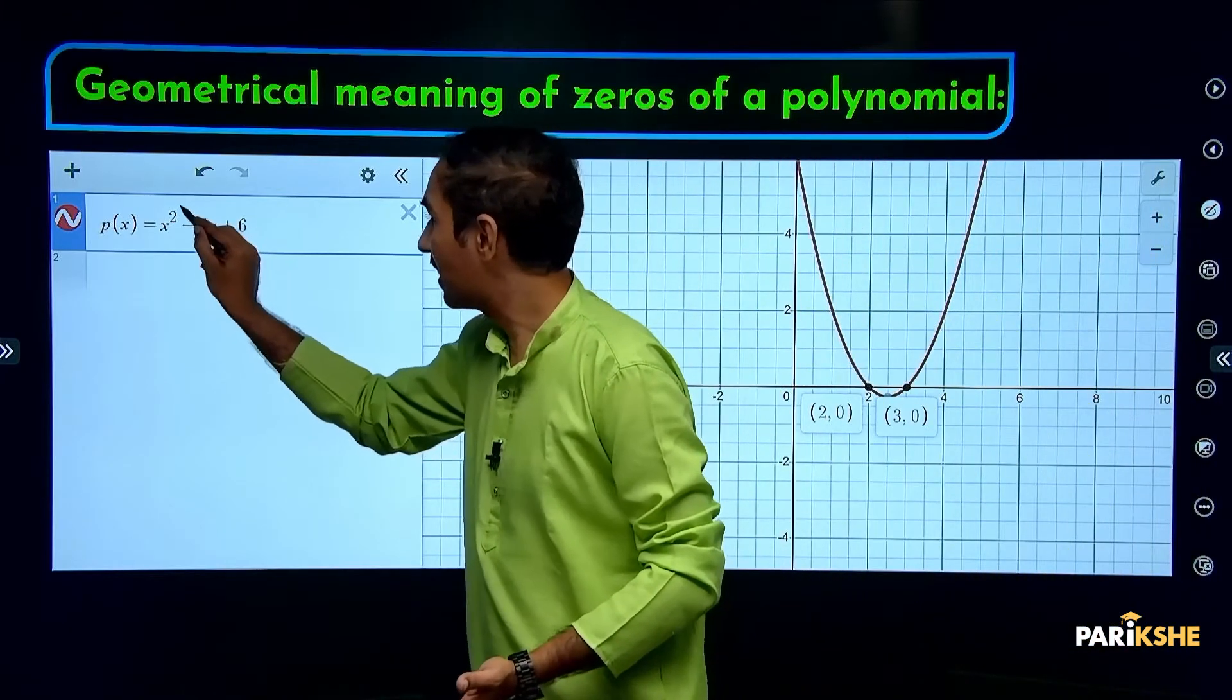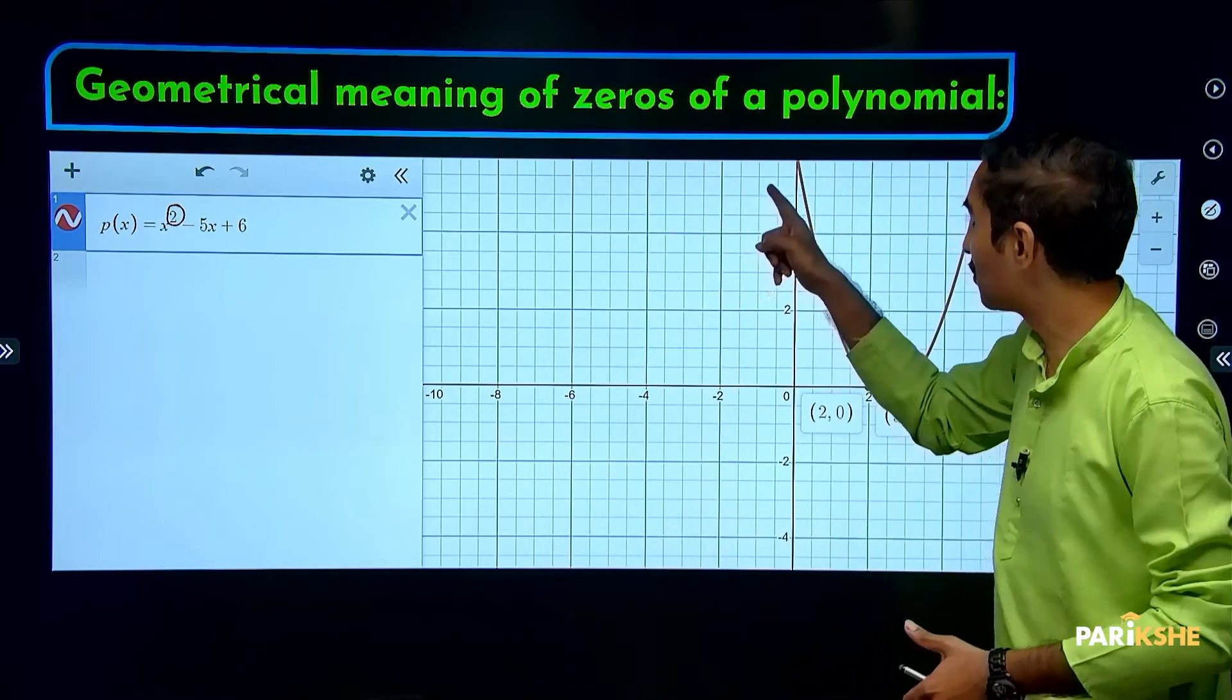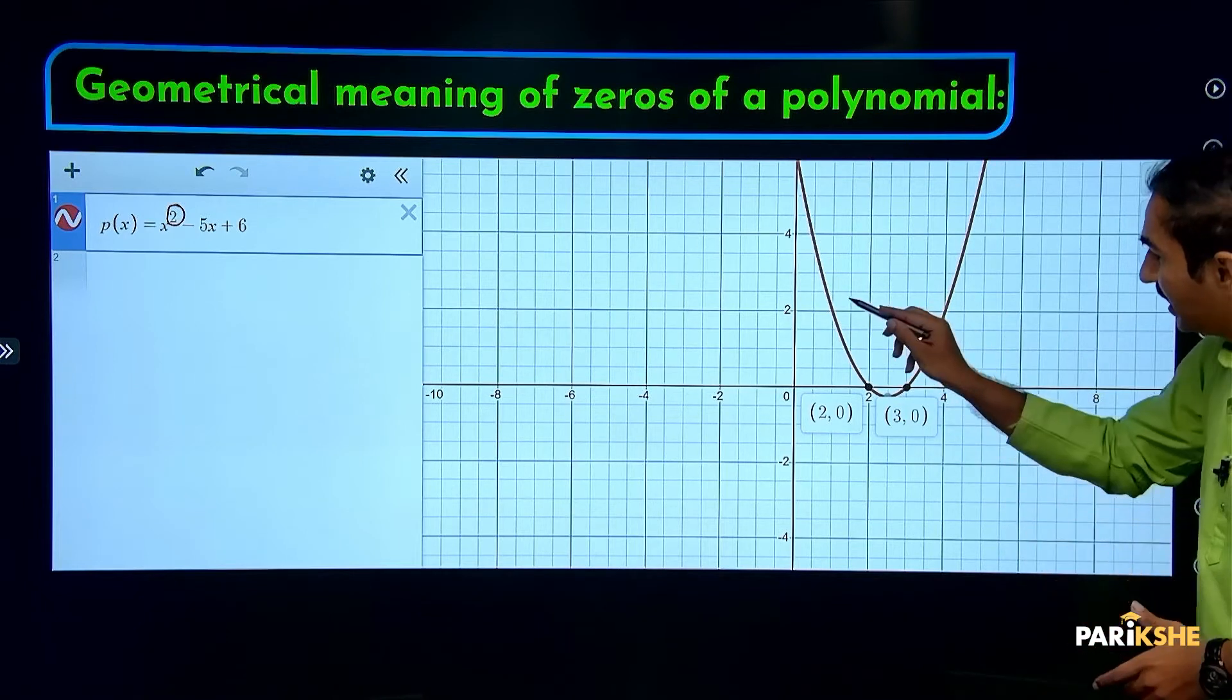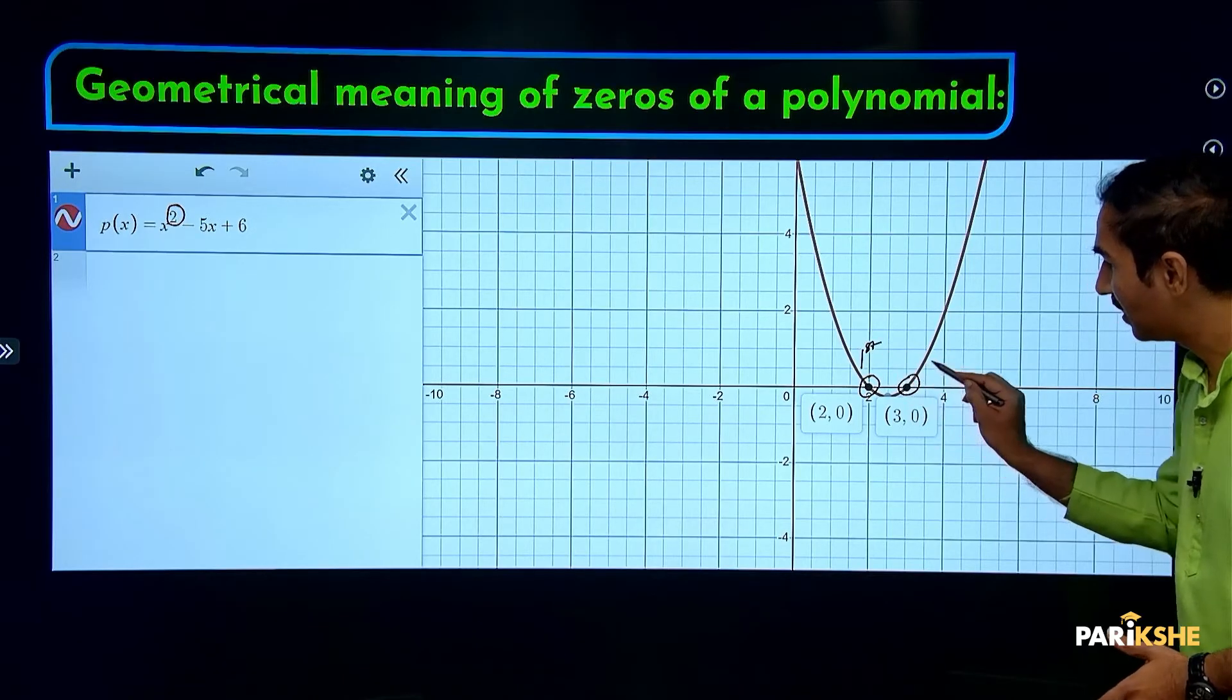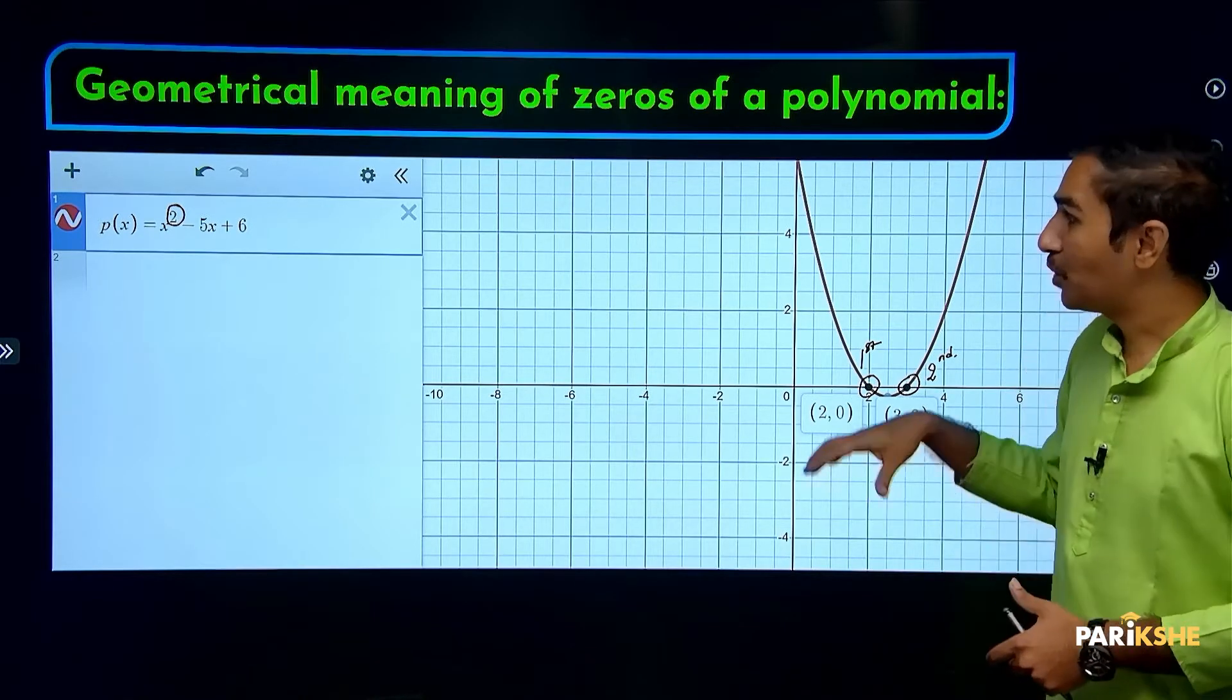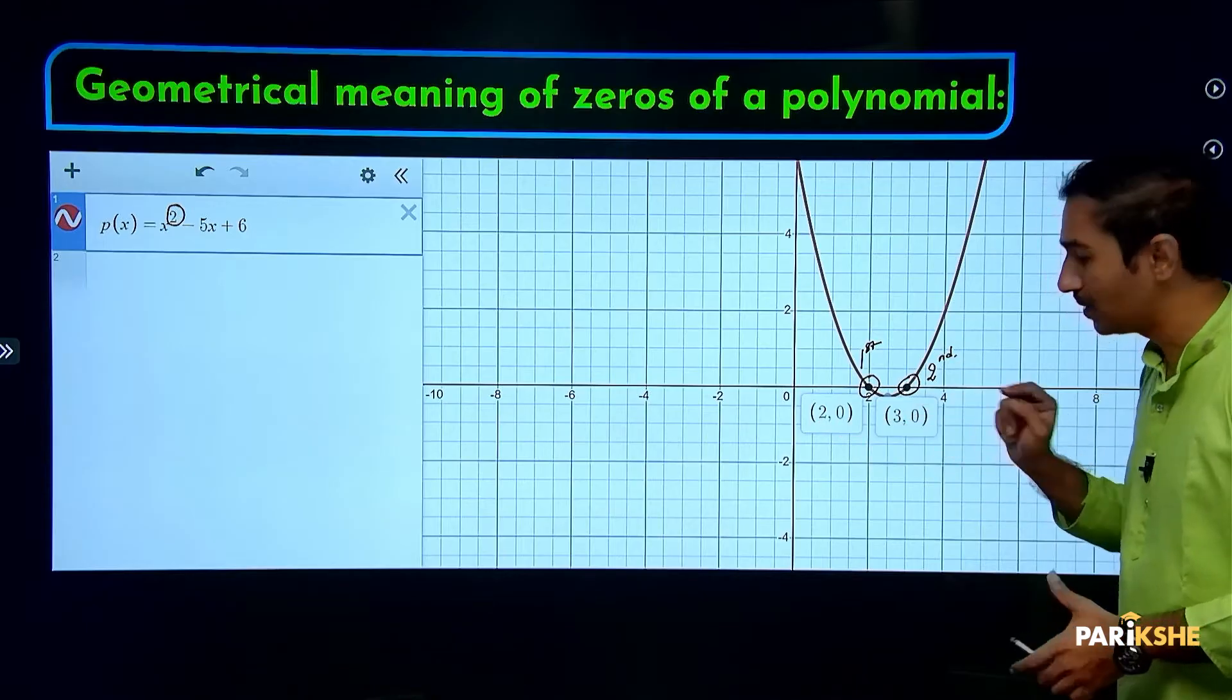Quadratic means highest power 2. This quadratic polynomial has two zeros. Looking at the graph, the graph intersects the x-axis at two points. This is the first zero and this is the second zero. From the graph, the first zero is at 2, the second zero is at 3.